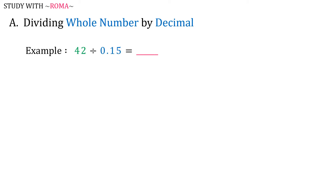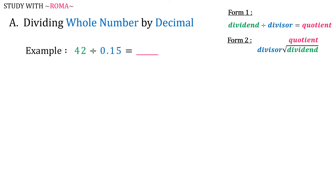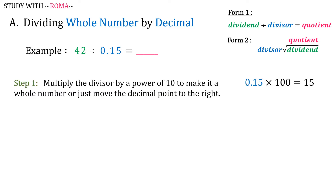First, dividing whole number by decimal. For example, 42 divided by 0.15. Remember the following forms: dividend divided by divisor equals quotient. Step 1: Multiply the divisor by a power of 10 to make it a whole number, or just move the decimal point to the right. So, 0.15 times 100 is equal to 15.